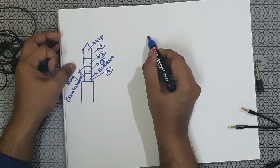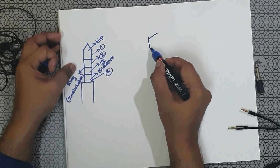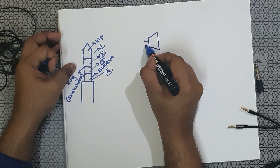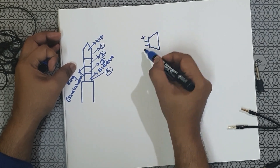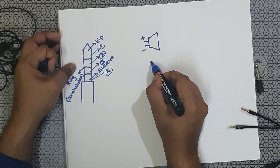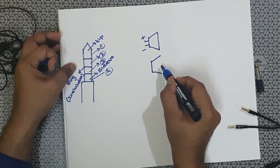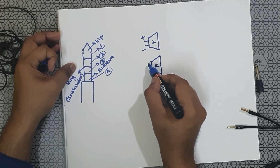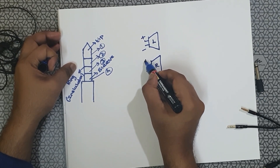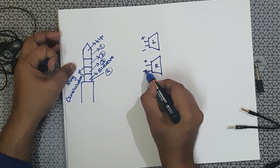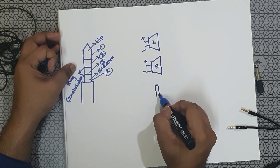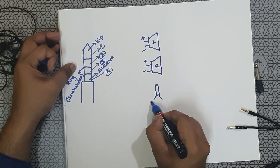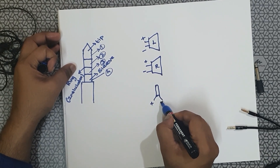If you take a speaker, two pins will be there — one positive and one negative. Headphones have two speakers: one left and one right, each with a positive and negative. Headphones also have a mic, and the mic also has two pins — one positive and one negative.